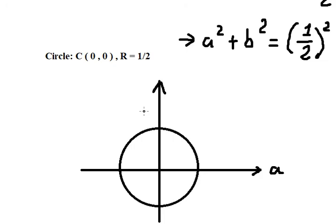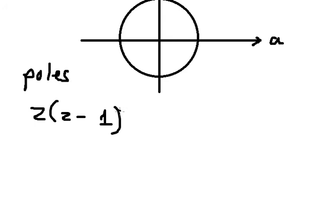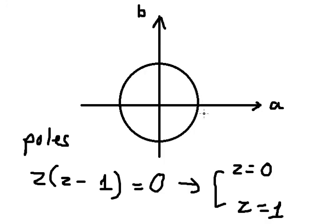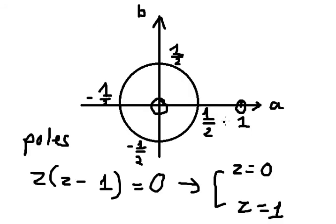This one is A and this one is B. We have the poles here — we need to find the poles. We have Z equals 0 and Z equals 1. We can see that the point 1 over 2 is on the circle, and also negative 1 over 2 and negative 1 over 2 on the axes. We see that number 1 is outside the contour of the circle.